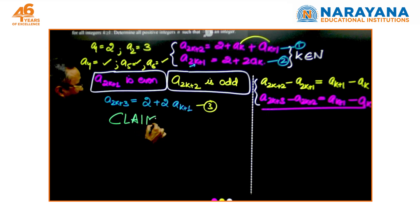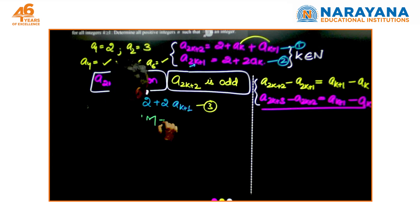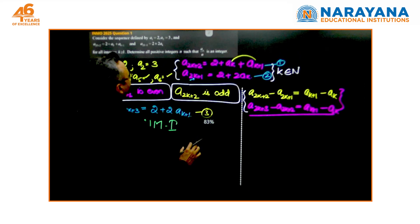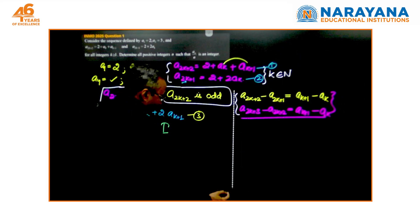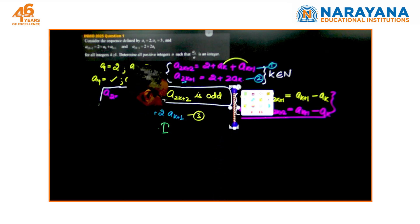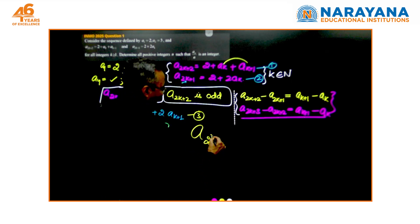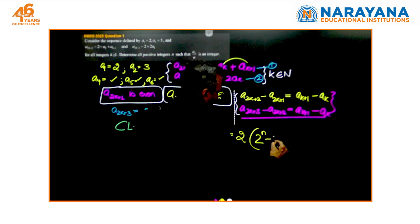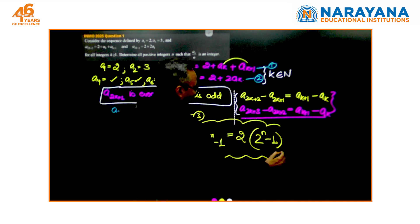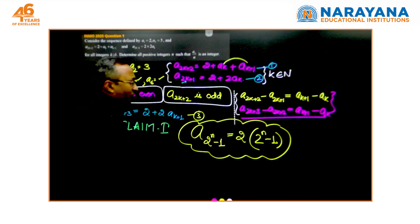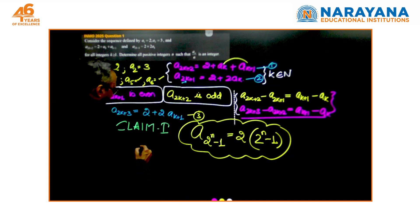The moment you start writing these terms here with more such numbers, you reach to a powerful claim. The idea is: why should I claim something? The claim 1 here says it is pretty simple that after writing few terms, because you are asking for an integer, we realize when do we get that integer. It is as simple as: I write few terms and I make a statement: a_{2^n - 1} equals 2 times 2^{n-1}. It is just a claim.